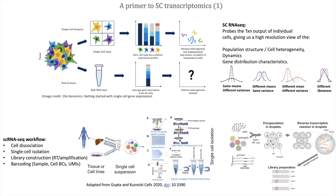A typical single-cell RNA-Seq workflow starts with cell dissociation, where you basically try to move apart the cells that you want to assay. Then you have to isolate the cells, and depending on the specific technology that you use, there are many ways in which you can do that. By far the most common technique is the isolation of cells by encapsulation in droplets, also known as microfluidics. What happens is that you end up with small droplets that contain hopefully only one cell, although there are cases where you can have multiplets of cells in the same droplet.